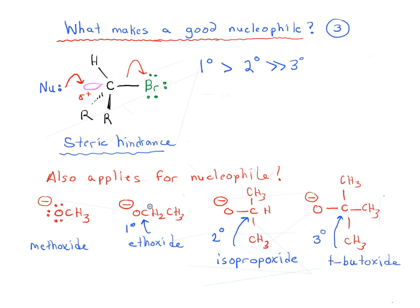As you increase the bulk of the group attached to our O minus, because our O minus is constant, the steric bulk of this group increases. Therefore, when these alkoxides are doing a nucleophilic attack on our alkyl halide, as we increase the steric bulk, there's going to be a greater chance for interaction of the sterically bulky groups with some of the R groups attached to our alkyl halide, and this is going to slow the reaction down.